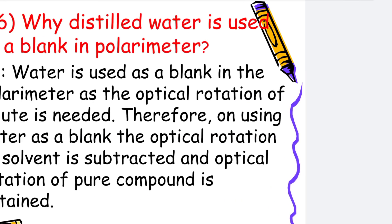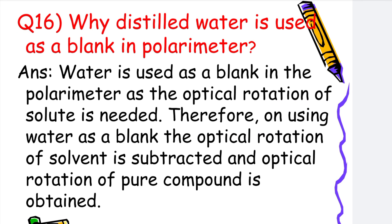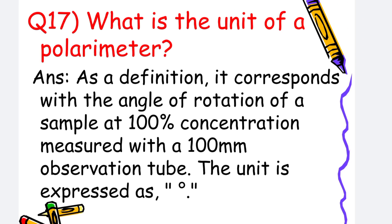Why is distilled water used as a blank in a polarimeter? Water is used as a blank in the polarimeter because the optical rotation of the solute is needed. By using water as a blank, the optical rotation of the solvent is subtracted and the optical rotation of the pure compound is obtained.